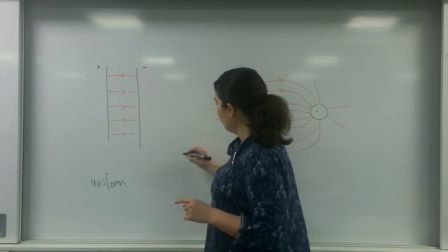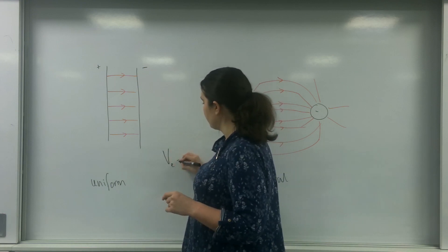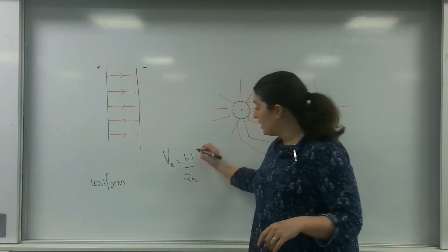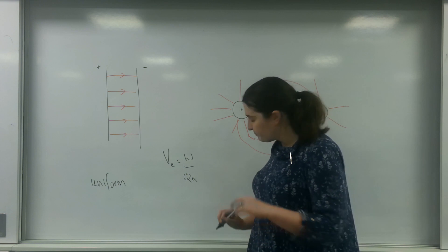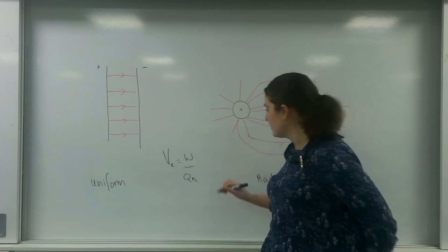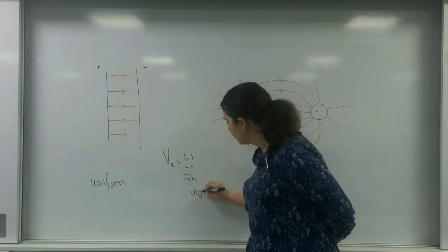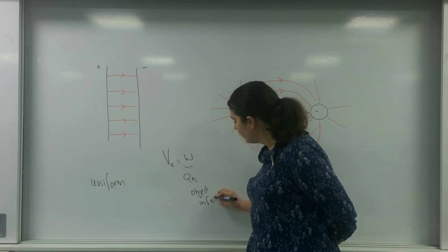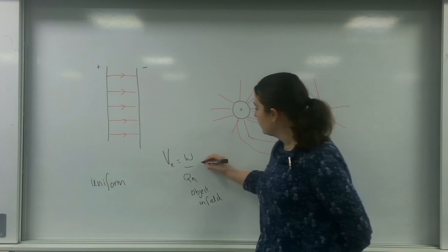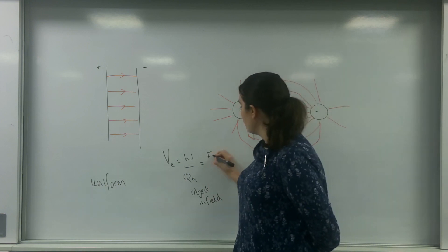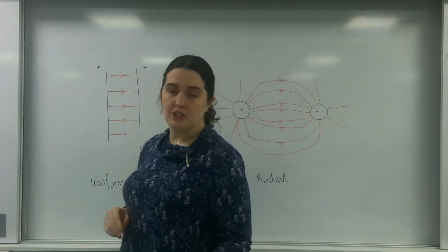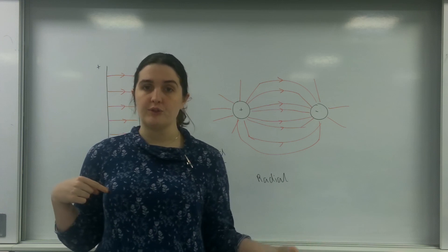Electric potential is defined as the energy per unit charge — this is the energy that an object in the field would feel as it moves around in these field lines. Work done can be defined as force times distance over charge. This is where we can discuss how radial fields and uniform fields are slightly different.